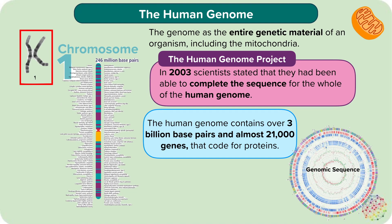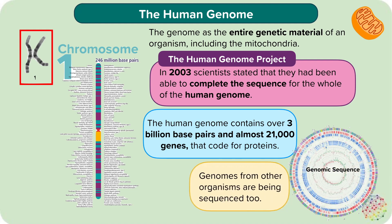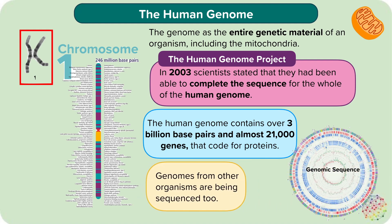This sounds like a lot. However, we know that rice has 36,000 coding genes. It is the ability to make different proteins from the same section of DNA that makes humans a more complex organism than rice. Since the initial research, scientists are also able to sequence genomes of hundreds of other species of organisms.